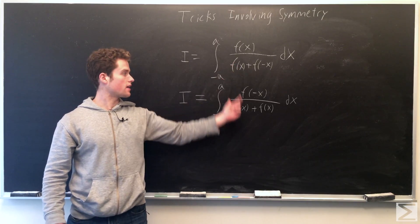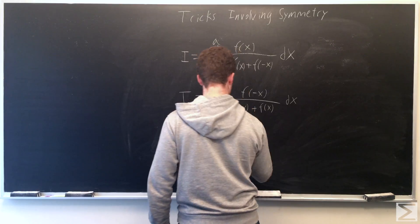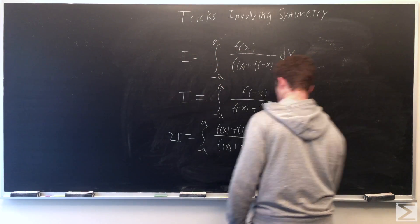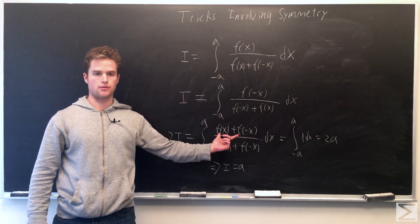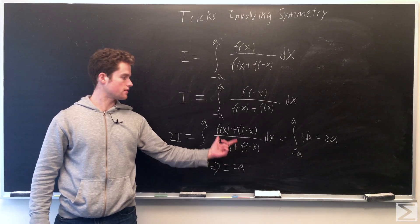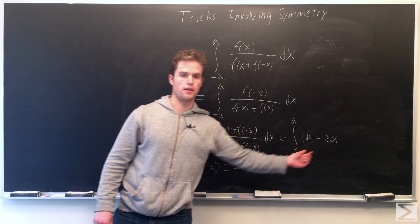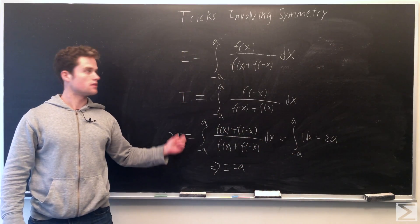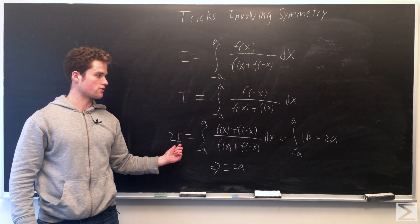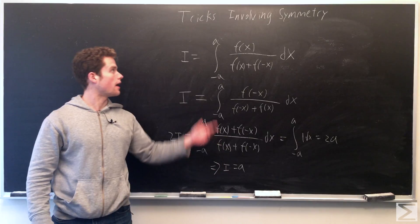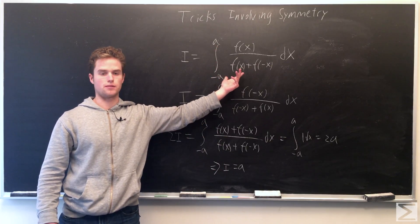With this, we can add these two integrals. If we add them, we get f(x) plus f(-x) over f(x) plus f(-x), which is just 1. So we're integrating from minus a to a of 1 dx, which is just 2a. Since the two integrals were equal, their sum is twice our original integral. So twice our original integral equals 2a, meaning the integral equals a. Surprisingly, this does not depend on the function.